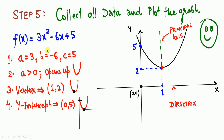Final step: collect all the data and plot the graph. We have a = 3, b = −6, c = 5, function of x, a > 0 so parabola opens up, vertex at (1, 2), y-intercept at (0, 5). Since the conic section is always symmetrical about the principal axis, you can easily complete and draw the curve.